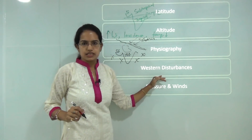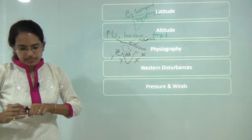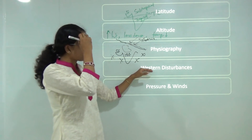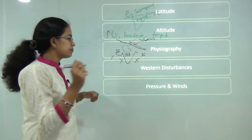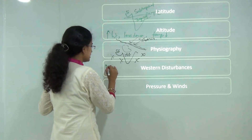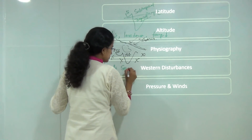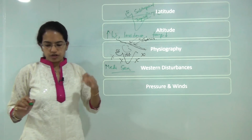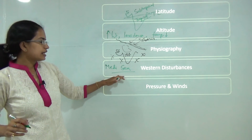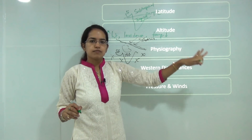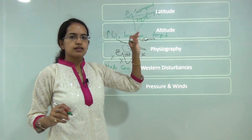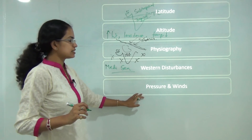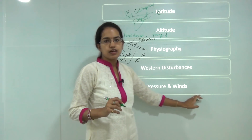The next factor is western disturbances, caused by cyclonic activities or westerlies blowing from the Mediterranean Sea. These western disturbances cause winter rainfall in most of the northern parts of India, mainly in the plains of Punjab, Haryana, and Uttar Pradesh.